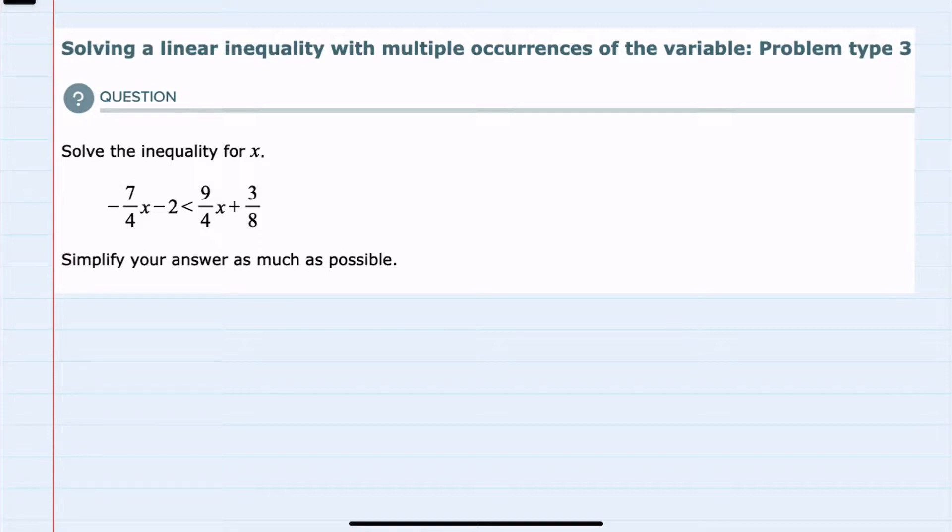Here we have an inequality, and we're going to be simplifying it as much as possible. One of the things I notice is that there are several fractions. It would be nice if I could get rid of those fractions. And in fact, I can get rid of the fractions if I multiply both the left-hand side and the right-hand side by the lowest common denominator.